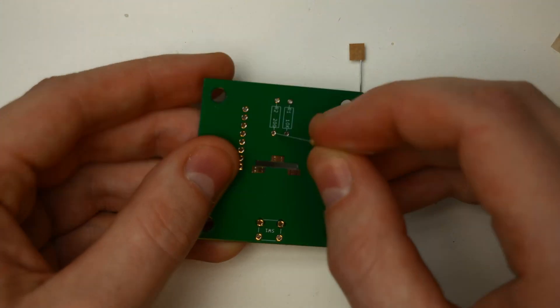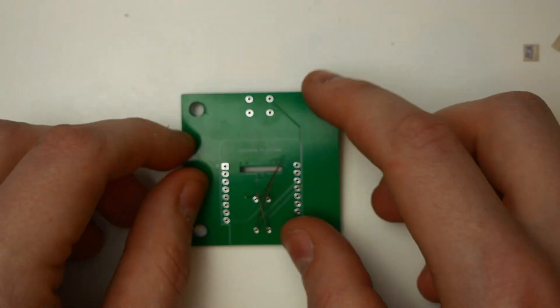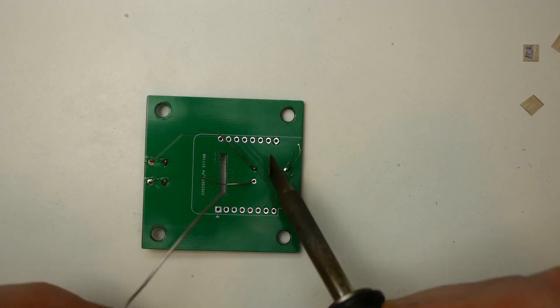Now we come to the baseboard. Here the 220 ohm, the 10 kilo ohm resistor, and the push button are put into the appropriate places and then soldered on the back side. Again the legs are broken off.